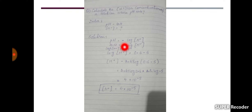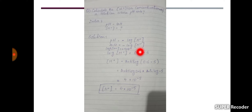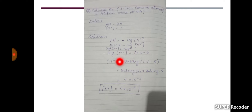Put the value of pH: 4.4 is equal to negative log of hydrogen ion concentration. Rearrange the formula — move the negative sign with 4.4, so log of hydrogen ion concentration is equal to minus 4.4.